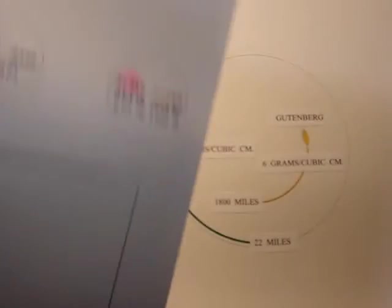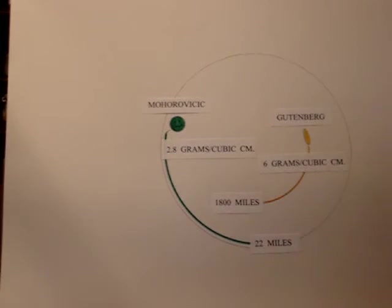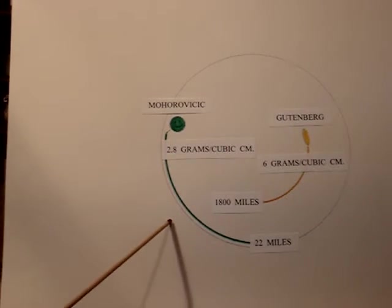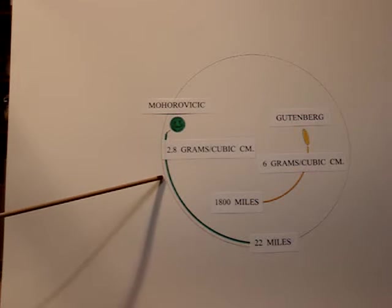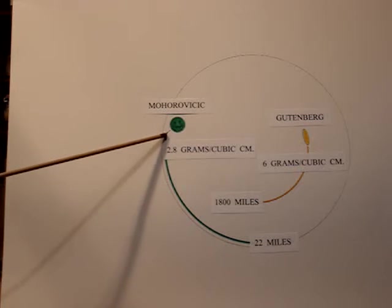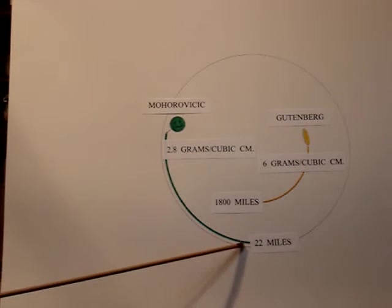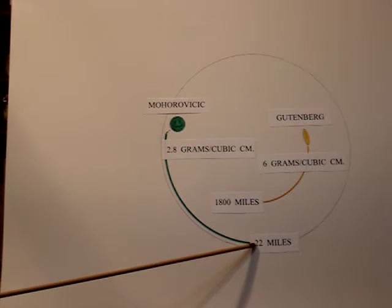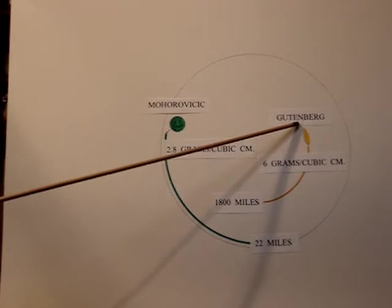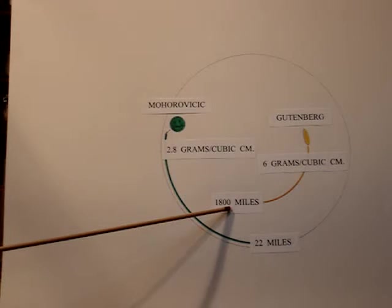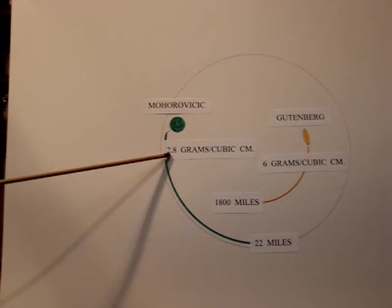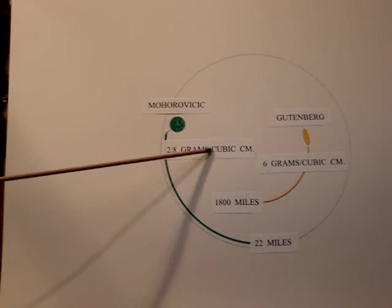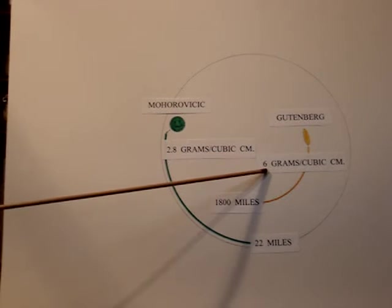I'd like to look at mass being condensed within our planet and how it is done by the act of gravity. The Mohorovicic discontinuity in this green line forms about 22 miles beneath the surface of our planet. The Gutenberg discontinuity is about 1,800 miles from its center. Notice that there is a condensing of mass. A cubic gram is 2.8 grams per cubic centimeter. It goes up to 6 grams per cubic centimeter, 1,800 miles from the center of our planet.